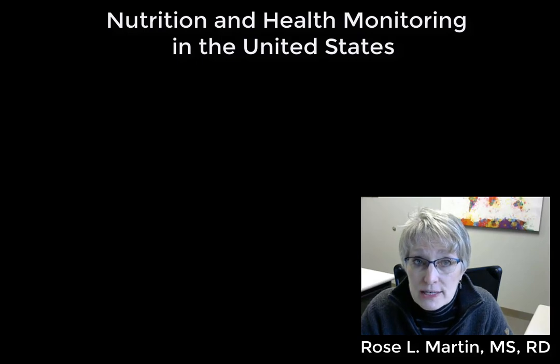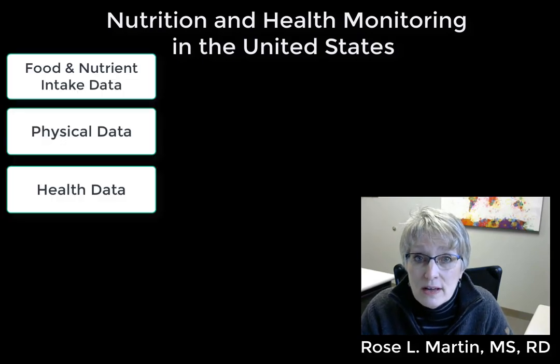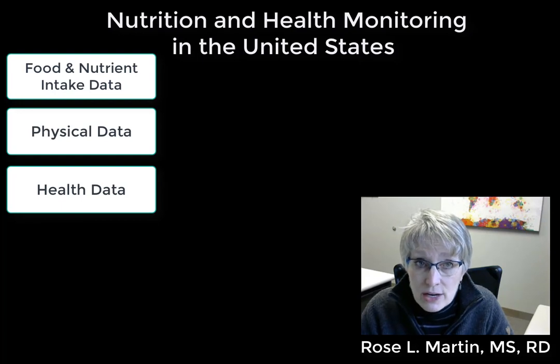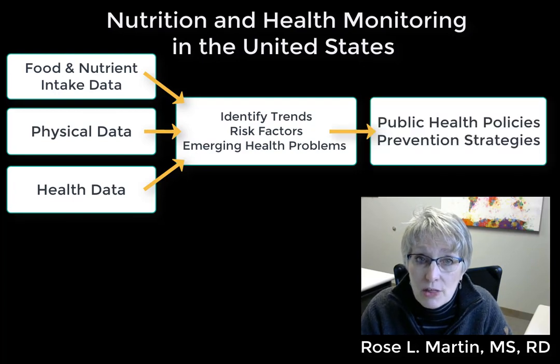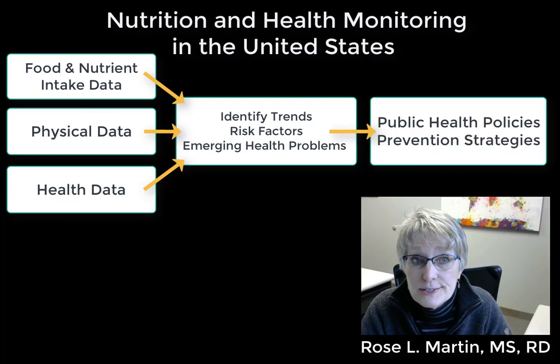The goal of measuring dietary intake for individuals is to identify nutritional problems and then develop strategies that can either resolve or at least improve that nutritional problem for that individual. The U.S. government has similar goals. Many federal departments will measure dietary intake for the U.S. population, along with a variety of physical and health status variables, and they can use this to identify trends, risk factors, and emerging health problems with the goal to implement public health policies and prevention strategies.